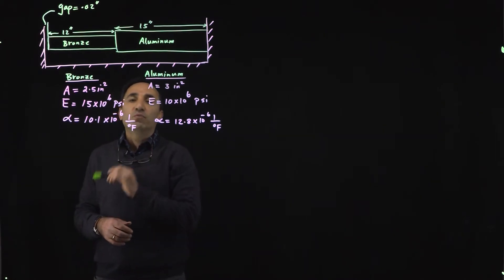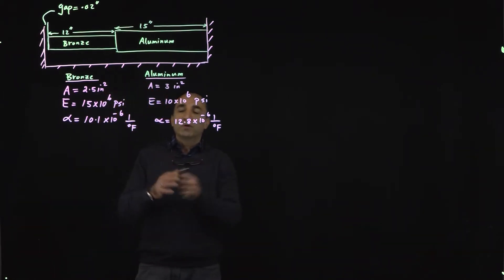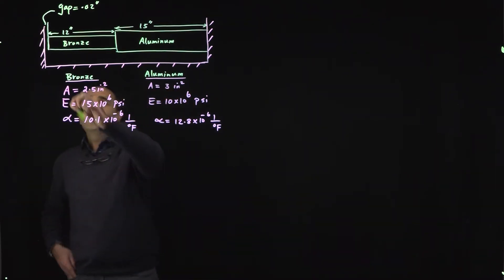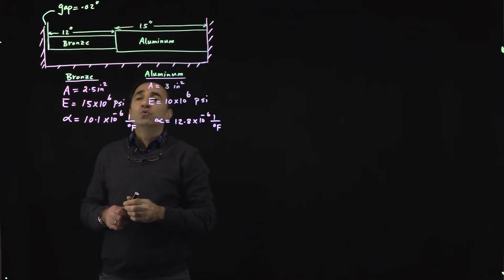Look at the unit of that, one over a degree Fahrenheit. Of course it could also be one degree Celsius if you change the unit system. Notice here there is a gap between the end of bronze and the wall. These walls are rigid so they're not going to move. The gap at room temperature is 0.02 inches.